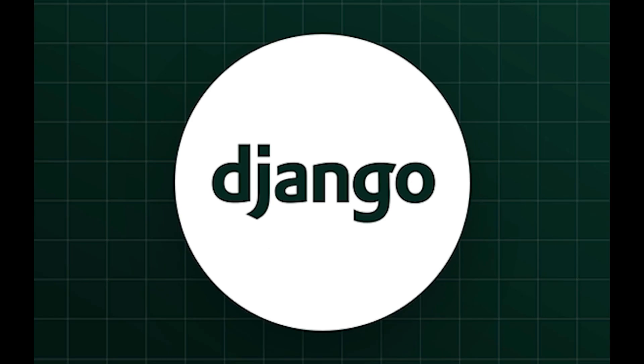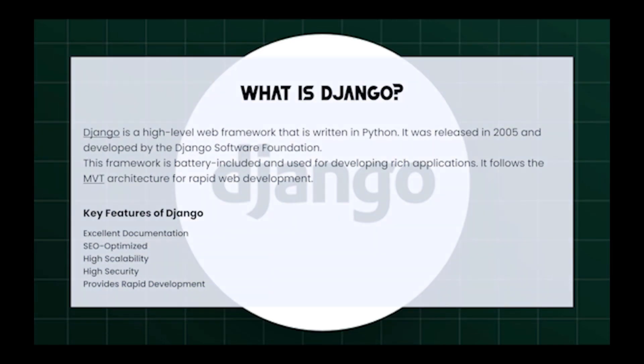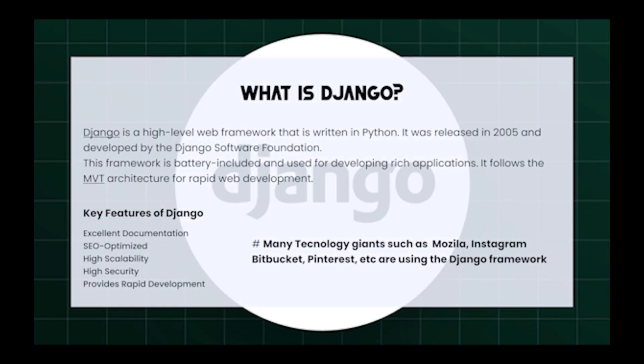First of all, what is Django? Django is a high-level web framework written in Python. It was released in 2005 and developed by the Django Software Foundation. There are many key features of Django, like excellent documentation, SEO optimization, high scalability, high security, and rapid development.